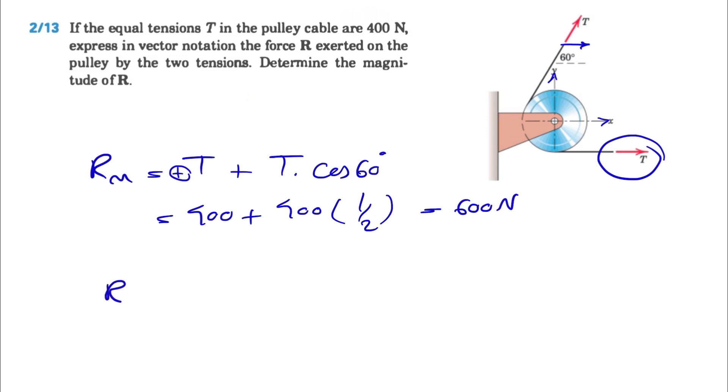And if you want to find the Y component of the resultant, as I mentioned earlier, there is no Y component for the T at the bottom of the pulley, but the other one, which I'm showing in here, has a positive Y component, and this time we will have T times sine of 60 degrees.